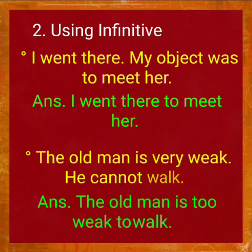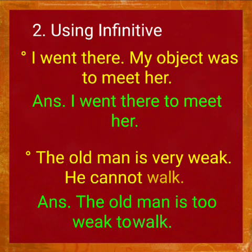Second method: using infinitive — that is, 'to' plus verb. Example: 'I went there. My object was to meet her.' The answer will be: 'I went there to meet her.' Here, the main verb is 'went.'